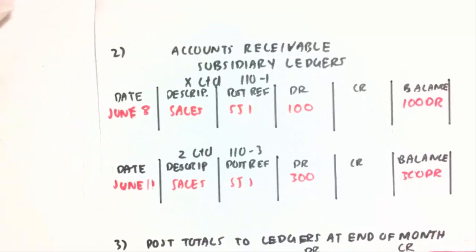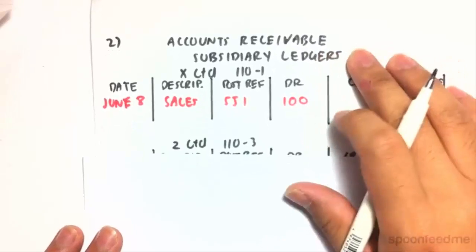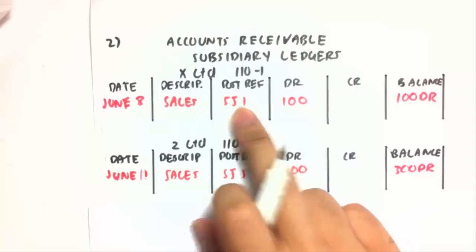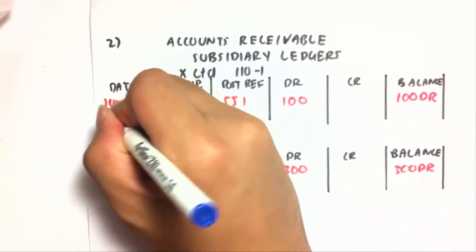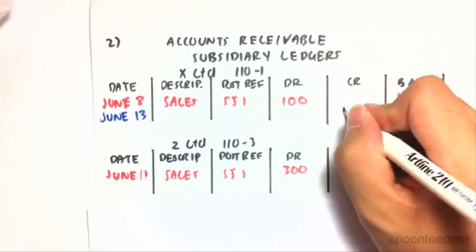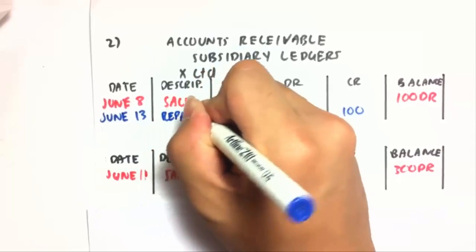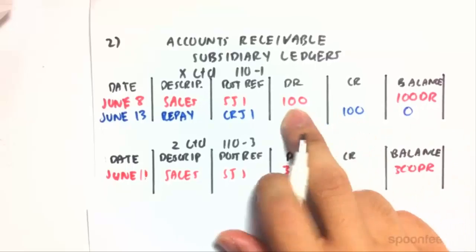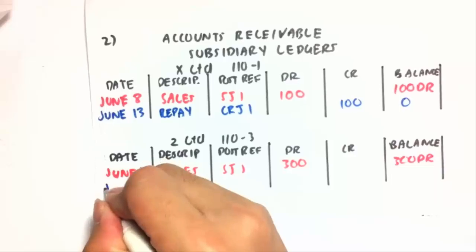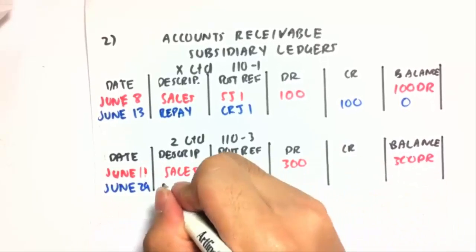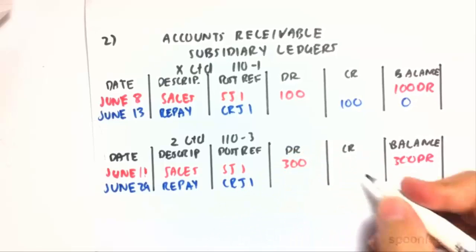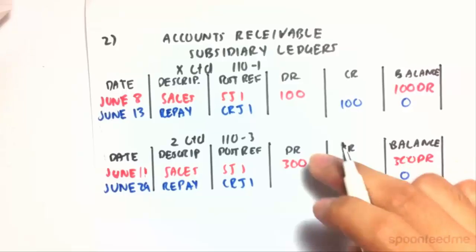Moving on to step two: we start posting to our subsidiary ledgers, but only for entries relating to accounts receivable. Remember on June 8th there was a credit sale from the sales journal of $100 for XLTD. Now on June 13th they've paid that back — the repayment is from the cash receipt journal, and the balance is zero because $100 debit minus $100 credit equals zero. Then on June 29th, ZLTD also repaid its debt — $300 from the cash receipt journal — giving a zero balance as well.